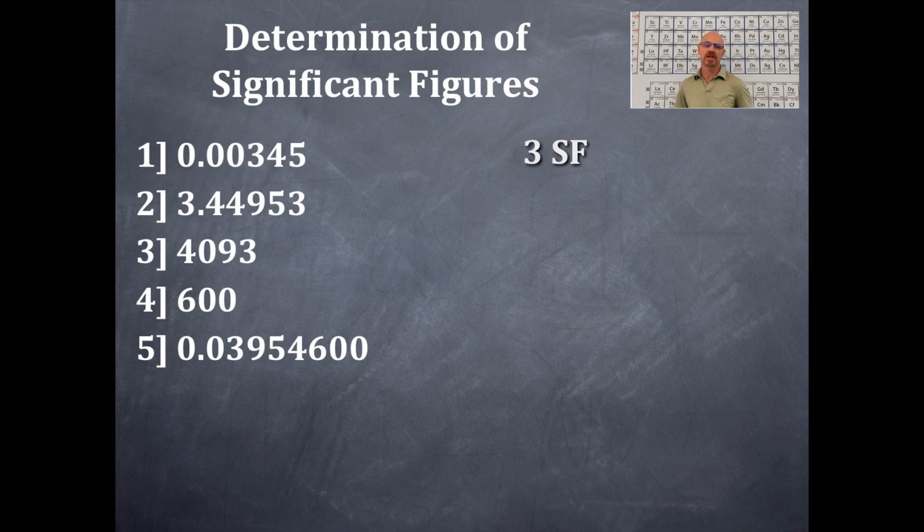Example number two, the number is 3.44953. Does it matter where the decimal is in this number or if it even has a decimal? The answer is no, it doesn't matter about the decimal. All the numbers here in this example are non-zero integers and they all count. So there are six numbers. They all count. That's six significant figures.